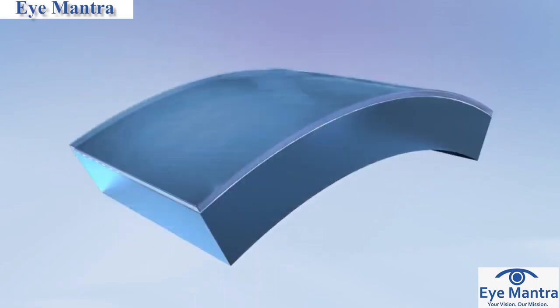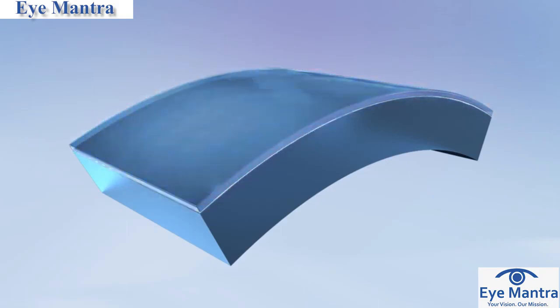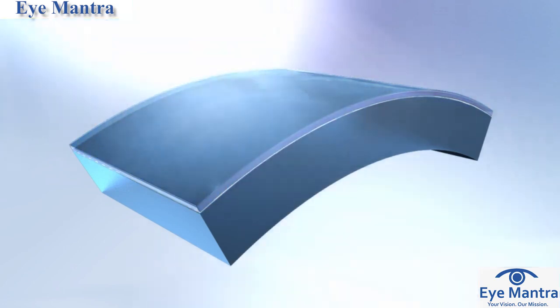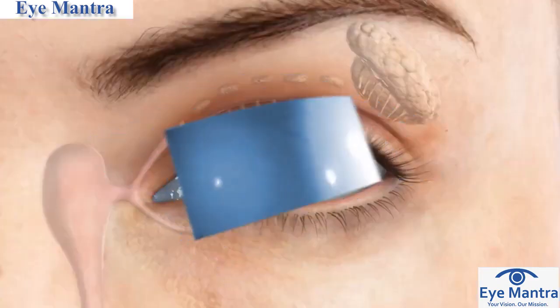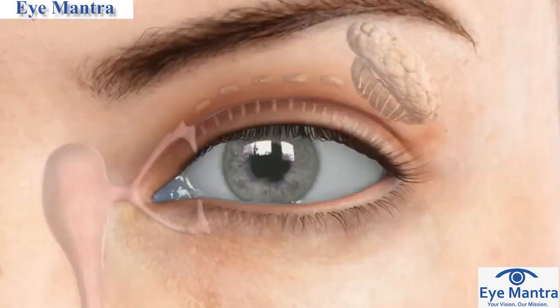The tear film serves several purposes. It keeps the eye moist, creates a smooth surface for light to pass through the eye, nourishes the front of the eye, and provides protection from injury and infection.